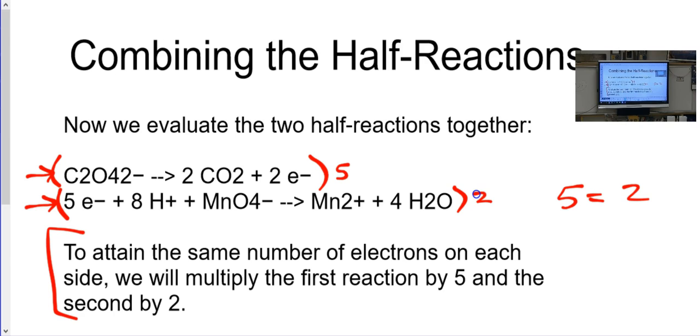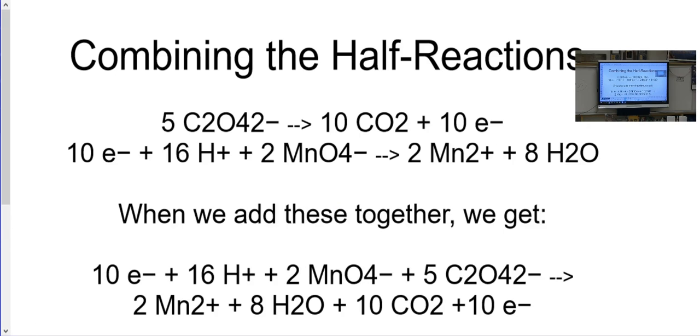And we do that part once again to make the electrons able to cancel each other out. Okay, so next slide. Combining the half reactions, then we get all this jazz. Ten electrons plus 16H+, plus 2MnO4-, plus 5C2O42-, goes to 2Mn plus 2 plus 8H2O plus 10CO2 plus 10 electrons. See why I had you put this on a new piece of paper? Well, we will cancel this stuff out. That's the next part.